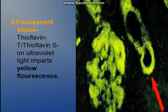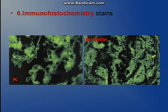Fluorescent stains can also be used, like thioflavin T and thioflavin S. When seen under UV light, they impart a yellow fluorescence. A specific test that can also be used is immunohistochemistry, using anti-AA and anti-AL antibodies, which will bind to the amyloid and be visualized on IHC.